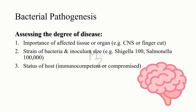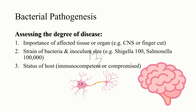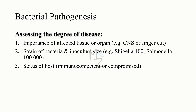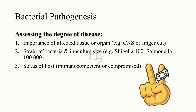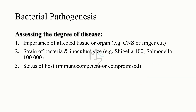Number one: we look at the importance of the affected tissue or organ. If the affected tissue is the CNS, it will be really deadly because CNS neurons have degenerative capacity and do not have regenerative capacity — they will not regenerate. This is a really bad infection. Compare that to a finger cut, which will take a small amount of time to be treated because the cells in the finger have regenerative capacity.